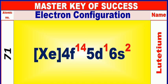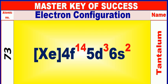Atomic number is 71 and name of atom is Eutitium. Atomic number is 72 and name of atom is Hapnium. Atomic number is 73 and name of atom is Tantalum. Atomic number is 74 and name of atom is Tungsten.